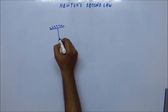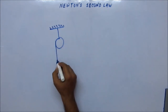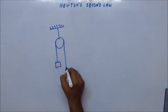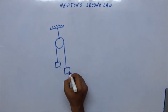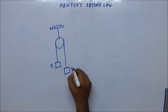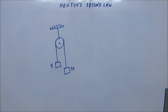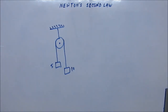Okay, let's solve this one. There are two masses, 5 kg and 10 kg, in a pulley system as shown. You have been asked: what's going to happen — which one is going to go up, which one is going to go down, and with how much acceleration?